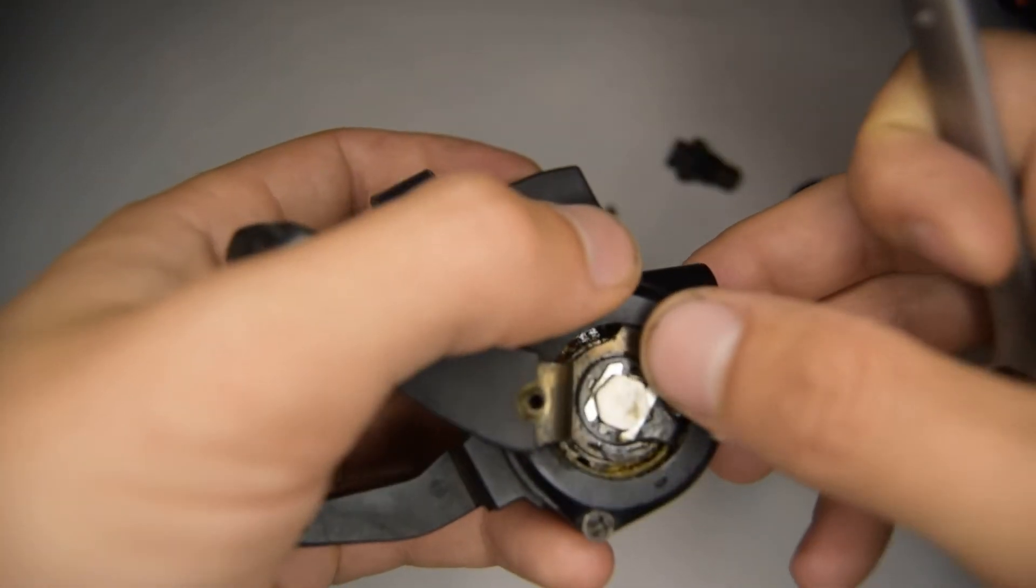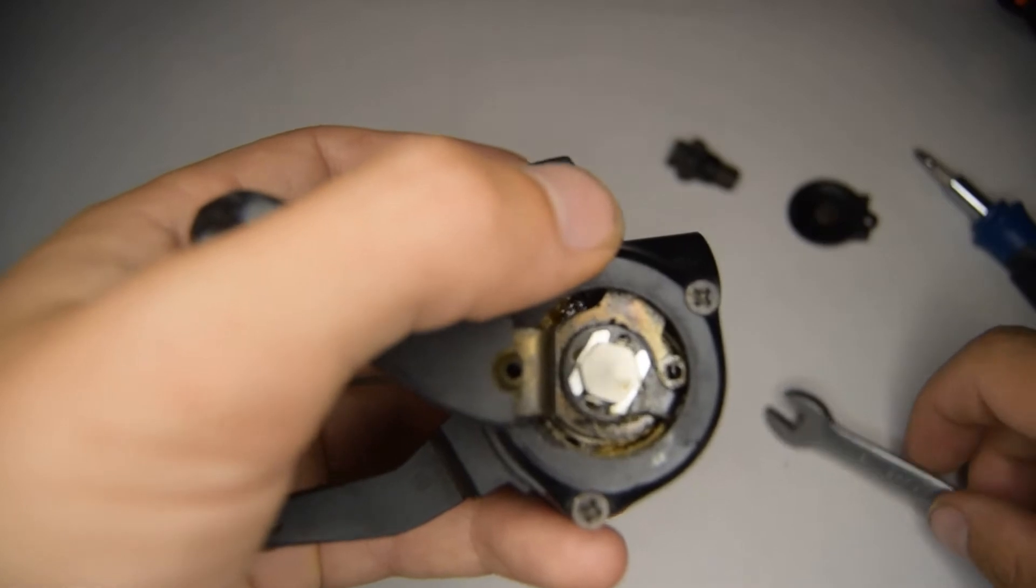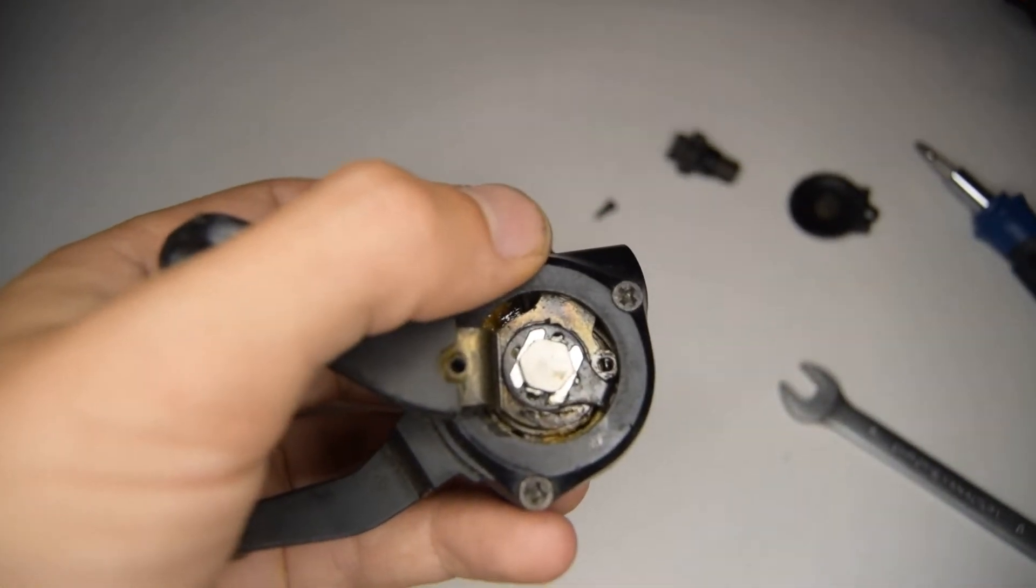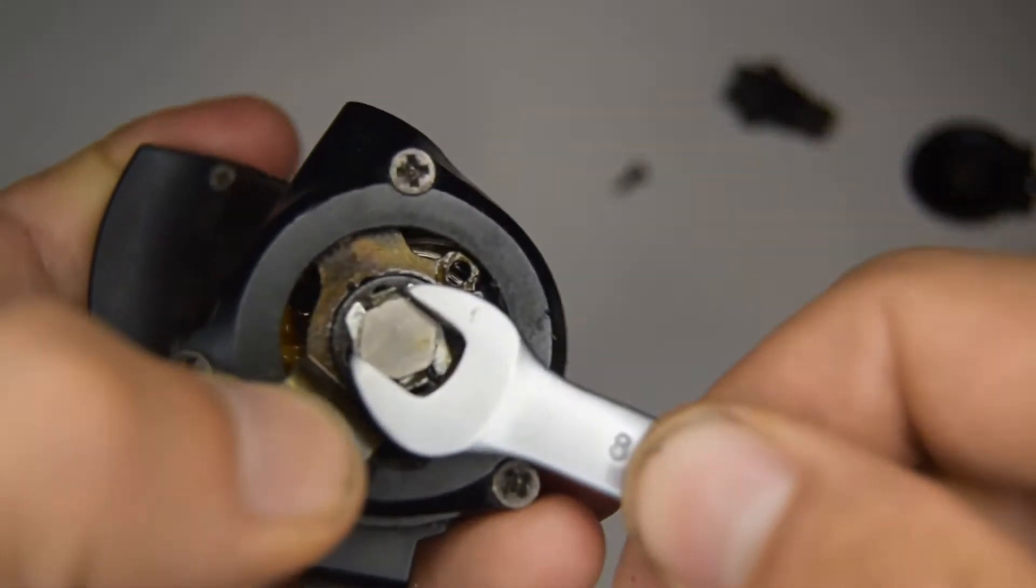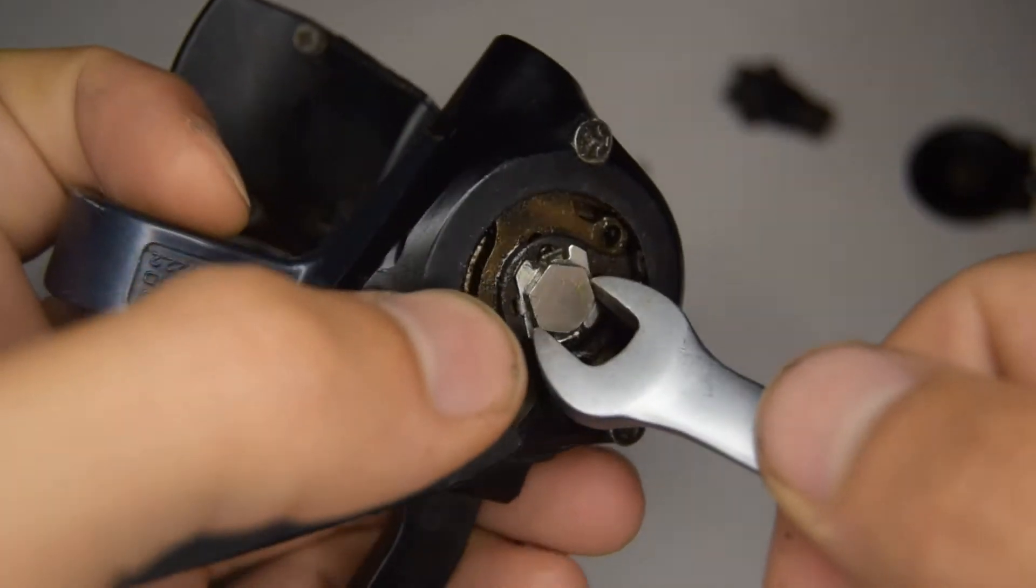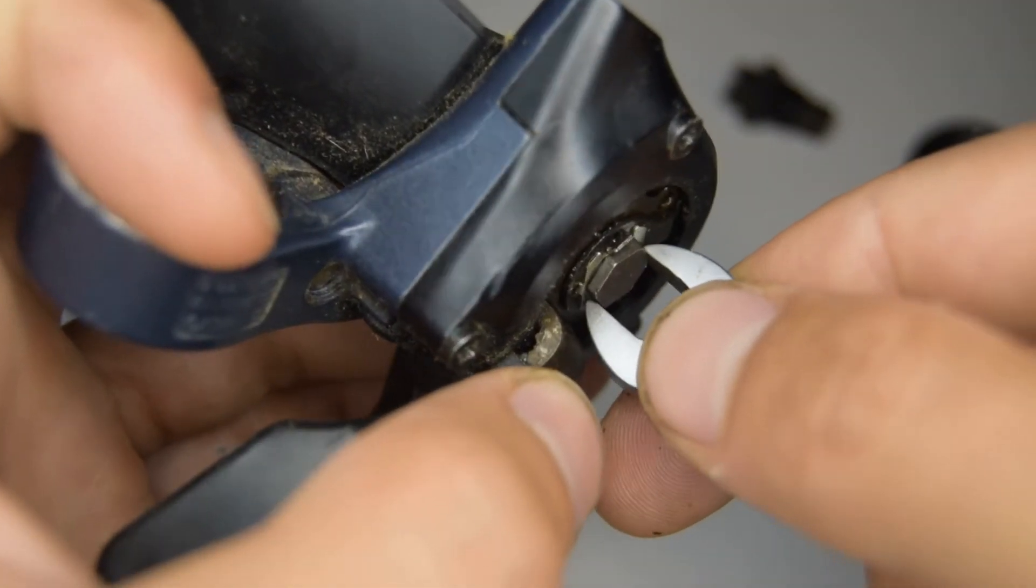Probably once we've removed this. So there's something, there's like kind of these blockers blocking the bolt. I think I'm going to try and bend them back. Okay, so it looks like this one undoes anti-clockwise.